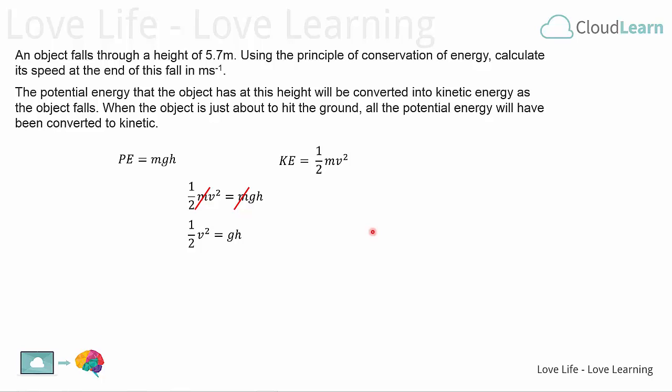which is 1/2 v² = gh. Now we can rearrange this equation in steps. First of all, we take over the two on this side, which is dividing the v², and we move it to the other side to become a multiplication. So we now have v² = 2gh.